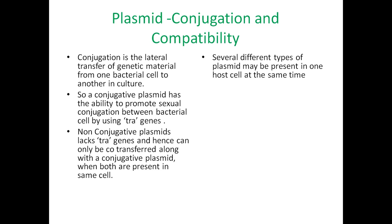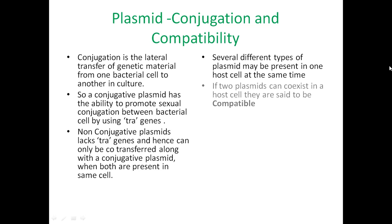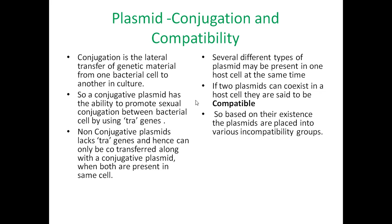Compatibility refers to whether two types of plasmid can exist in the bacterial cell at the same time. If two plasmids can coexist in the host cell they are said to be compatible. Several different types of plasmids may be present in one host cell at the same time. Based on their compatibility, plasmids are placed into various incompatibility groups.